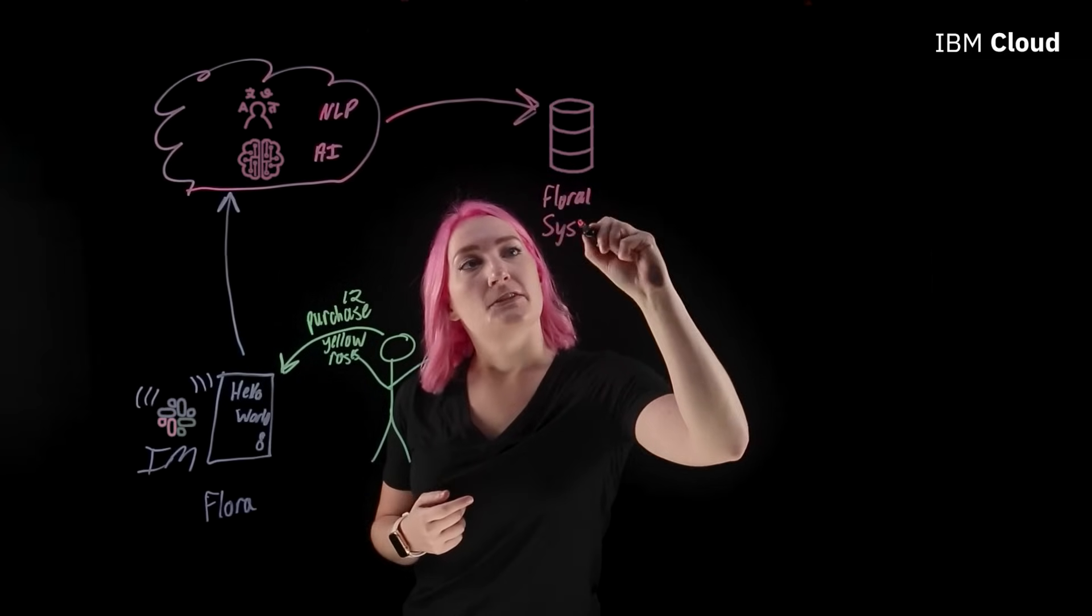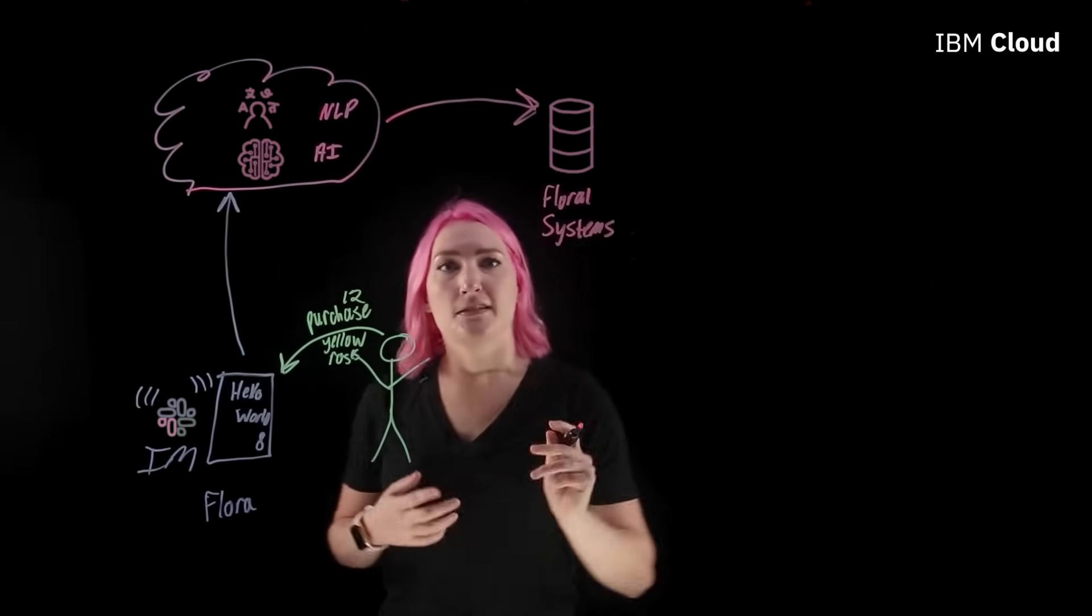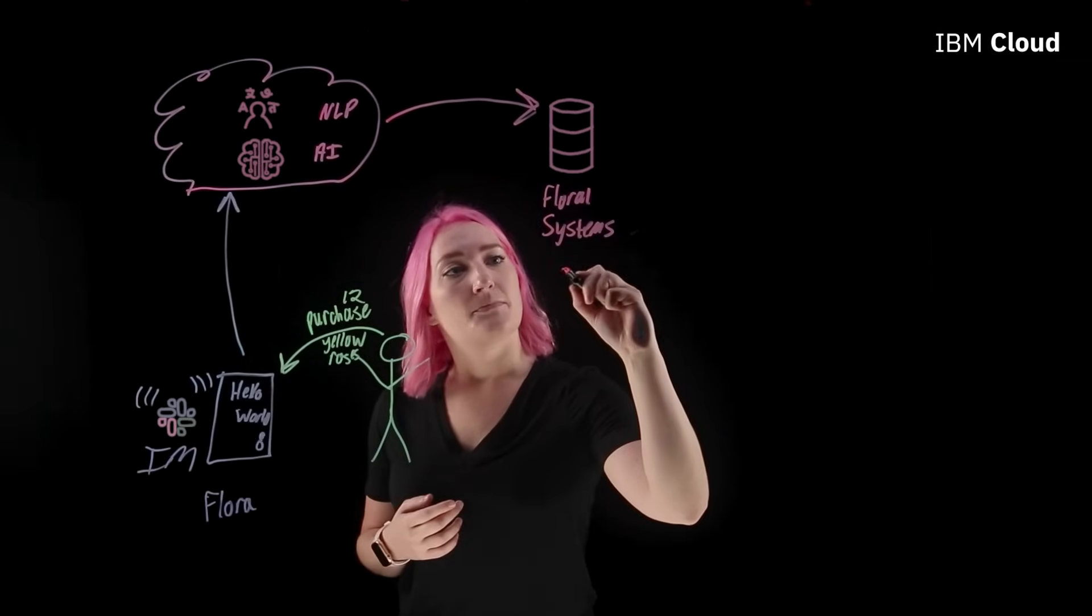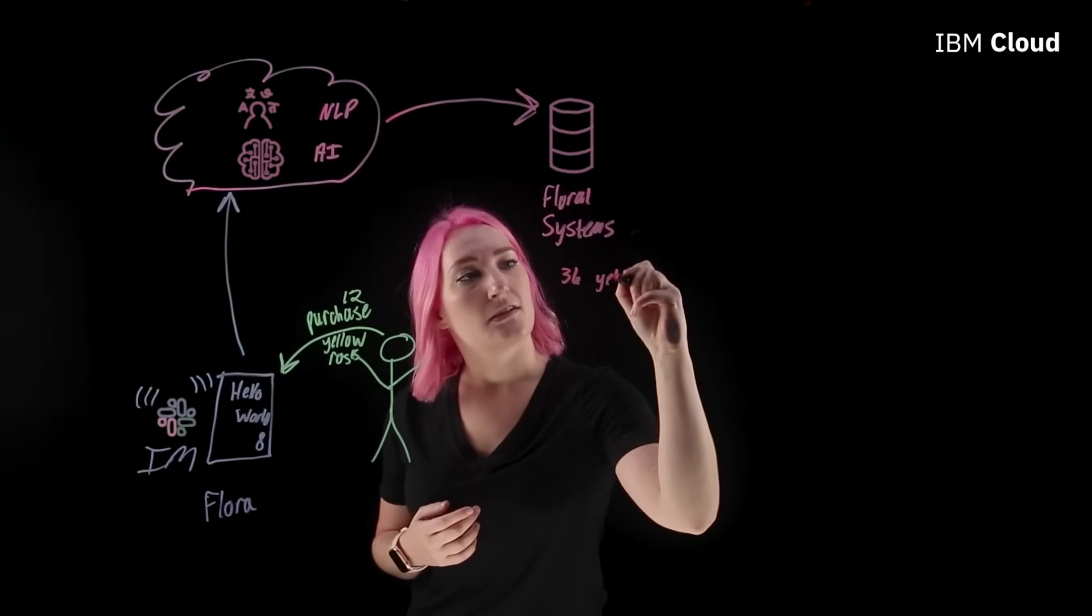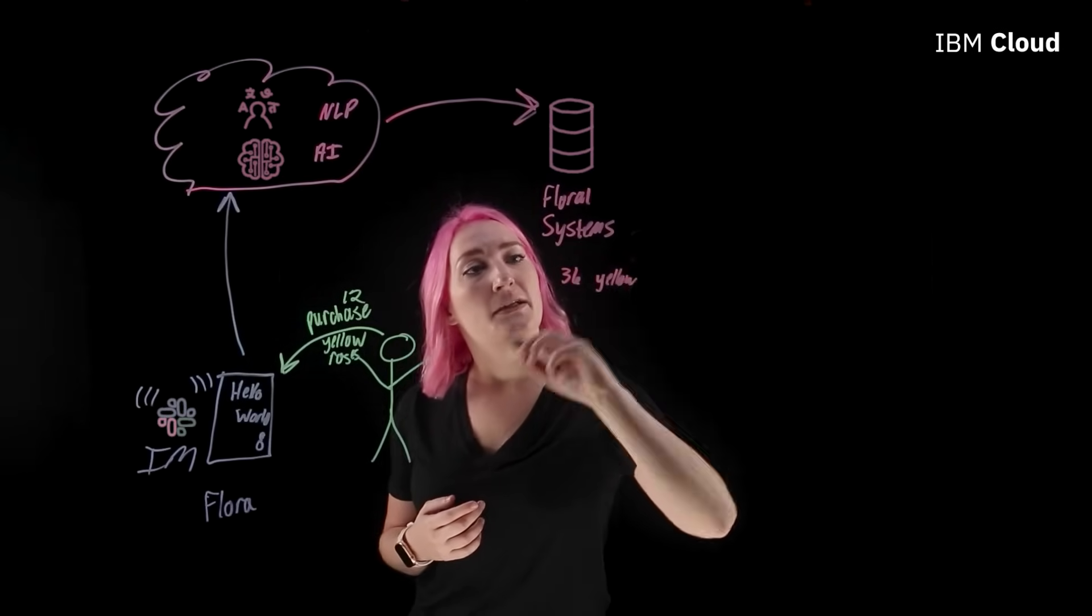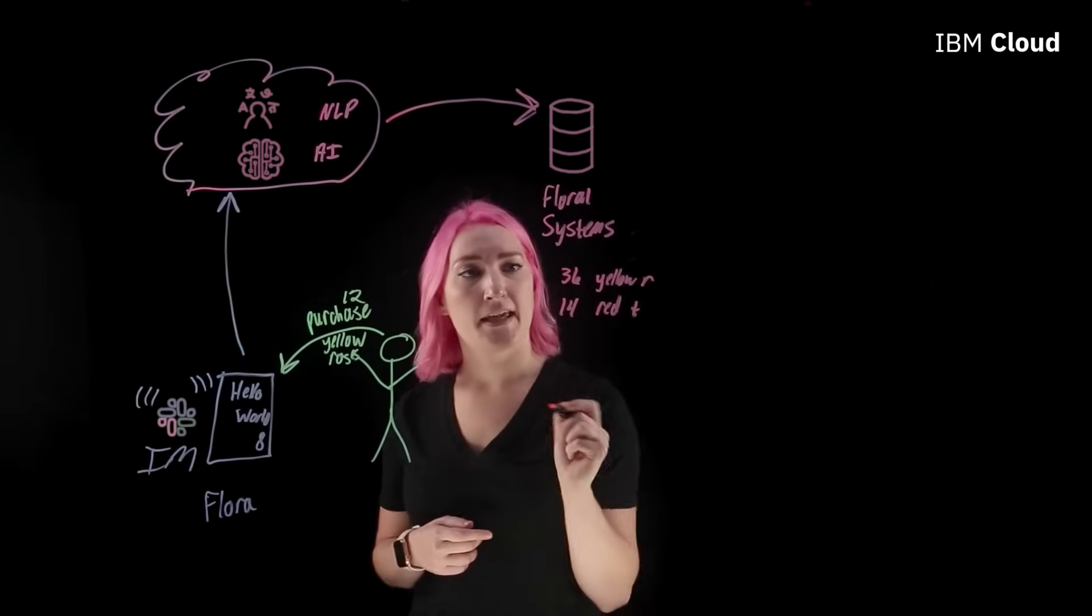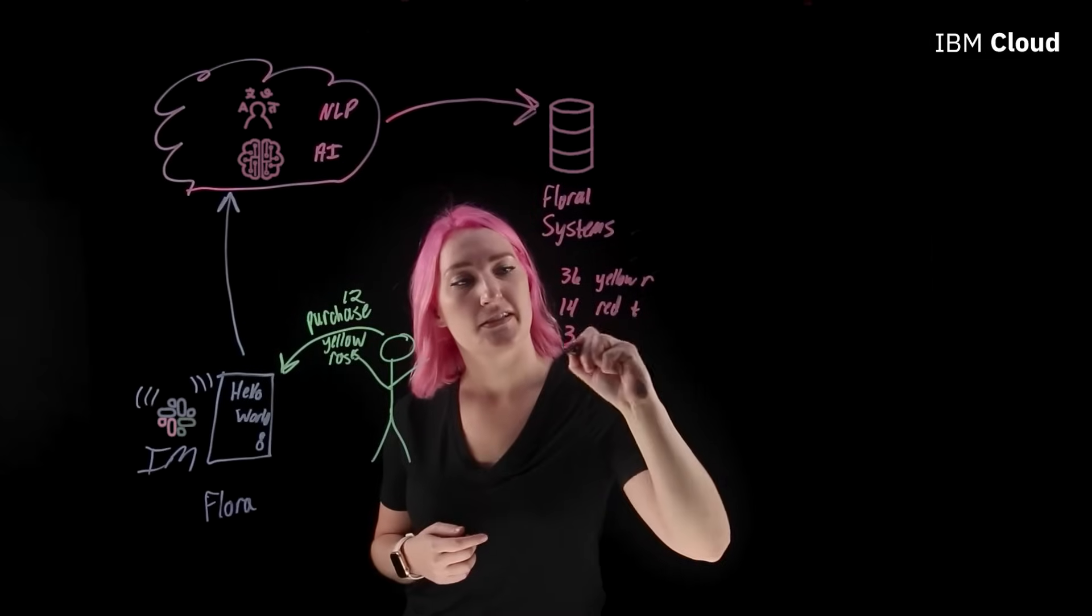And this is basically just going to be our database on the back end. And it's going to show maybe I have thirty-six yellow roses in stock. I've also got, let's say fourteen red tulips and three succulents.